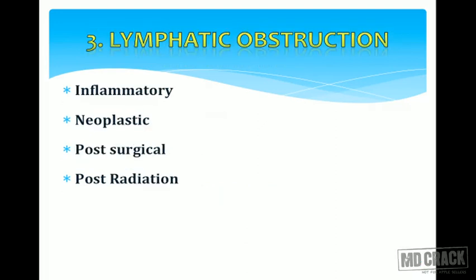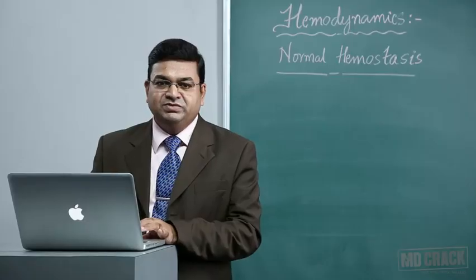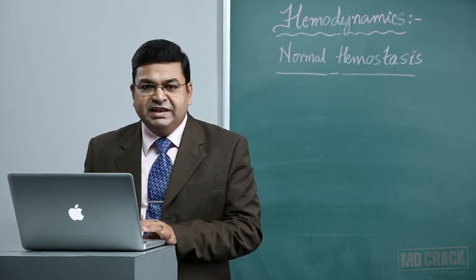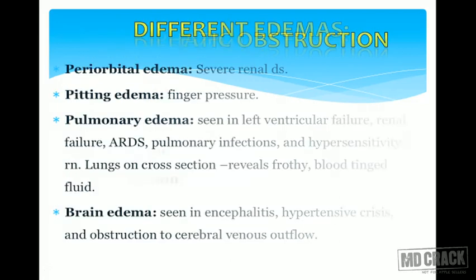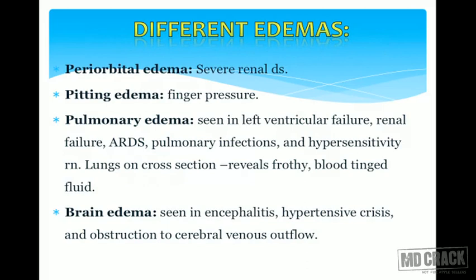Lymphatic obstruction is the third cause and is quite rare. Causes include inflammatory conditions like filariasis, neoplastic conditions with metastatic deposits in draining lymphatics, post-surgical causes such as after radical mastectomy causing upper limb edema, and post-radiation therapy which induces fibrosis and obstructs lymphatic drainage. These are the important causes of lymphatic obstruction resulting in edema.